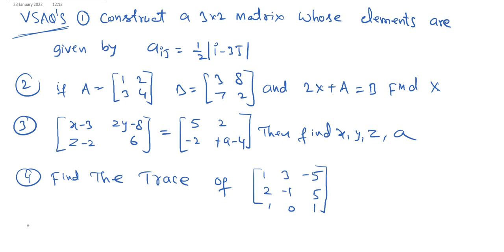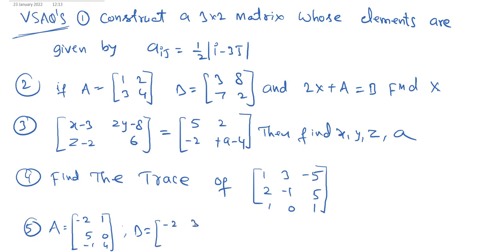Fifth question: if capital A = [−2, 1; 5, 0; −1, 4] and B = [−2, 3; 1, 4; 0, 2], then find 2A + Bᵀ.